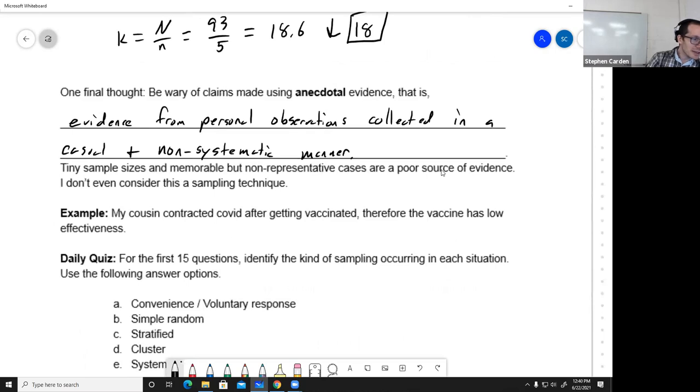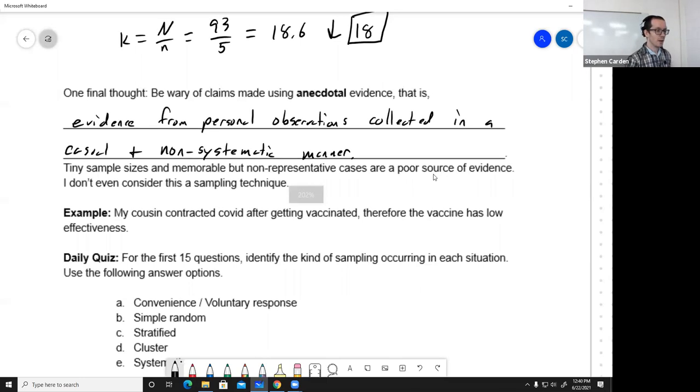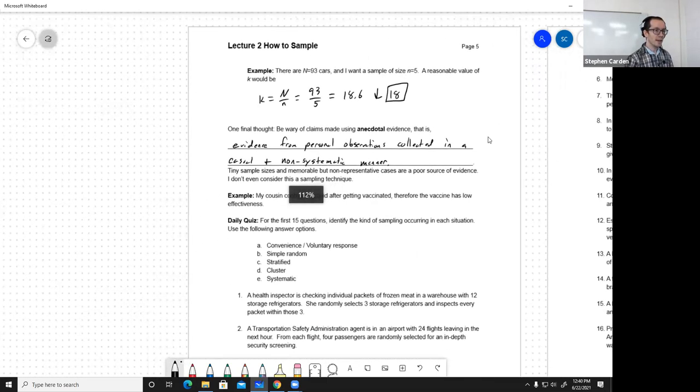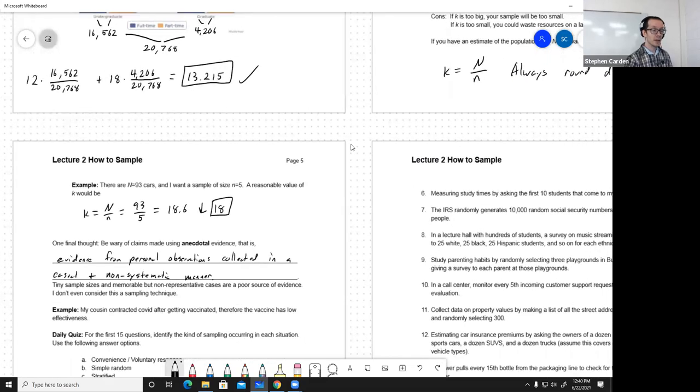Just an example: if you hear that somebody got COVID after getting vaccinated, is that strong evidence that the vaccine doesn't work? Well, it didn't work for that person, but is it working in general? The studies that are large scale seem to indicate it is. So kind of watch out for things like that. That is the end of lecture two.